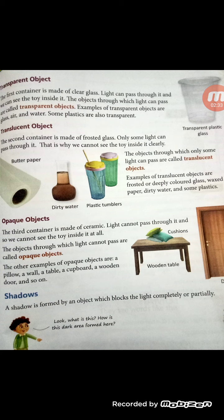Objects through which light can pass are called transparent objects. Today you have to collect all the materials through which you can see and keep them on the table — these are the transparent objects, because light can pass through them and that is why we can see. Examples of transparent objects include glass and air. As you are watching this video, air is present between you and me, but we are both able to see each other — that is why air is transparent.